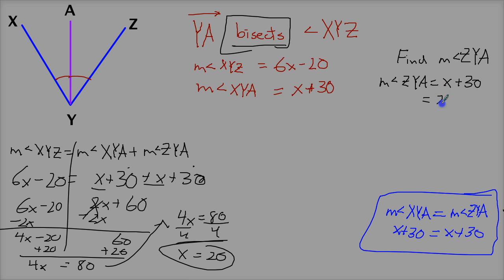So that means this should be 20 plus 30. So the measurement of angle ZYA is equal to 50.